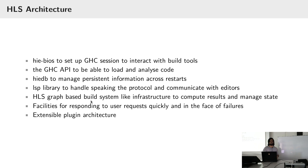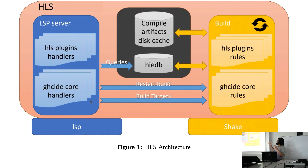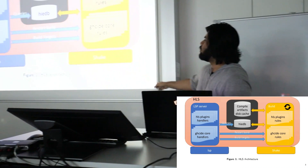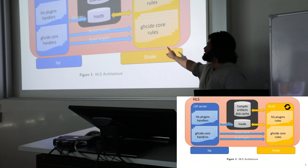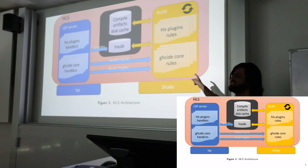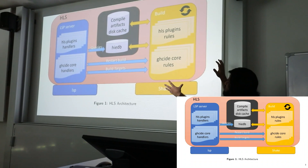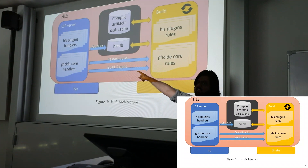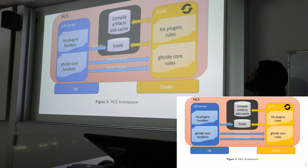This is a basic overview of how things work in HLS. On the left-hand side you have the part that talks to the editor, which is the LSP part. On the right-hand side you have HLS Graph — this is an old image, so it says Shake, but it should be HLS Graph. That part talks to GHC and is responsible for building your project and computing stuff about it. The left part talks to the editor and is responsible for communicating with the user, sending and answering requests.